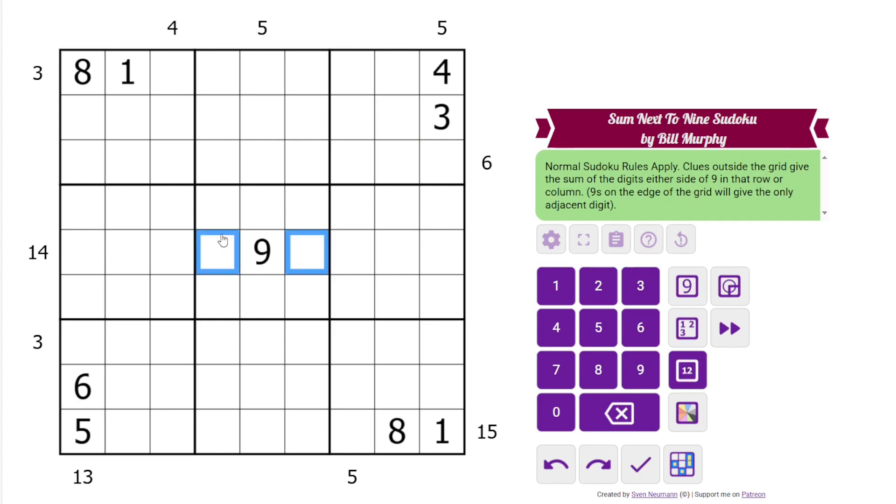So let's start with this 14. There are only two ways to make 14 in two cells. One of them is 5, 9, but we're using the 9 as the center of this clue, so this must be 6, 8. 5 could be 14 or 23. But this 3 clue is forced. We can't have a 9 in one of the corners, because those are already filled, so we can't have just one digit next to the 9.